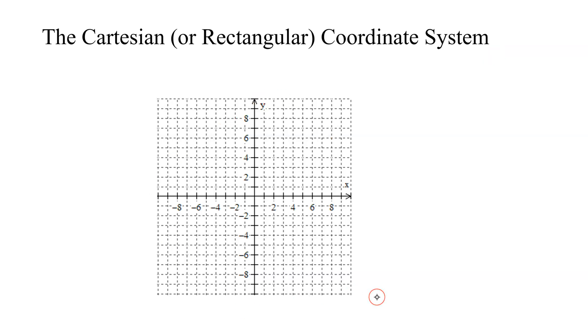Here's an example of it, and this system is based around two number lines. I have my horizontal number line shown here. That is called the x-axis, and on this number line, here is the zero of the number line. My positive numbers go to the right, my negative numbers go to the left.